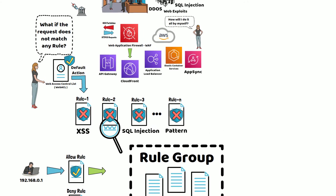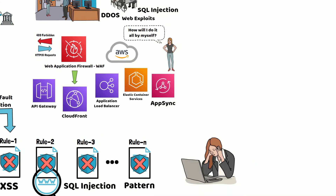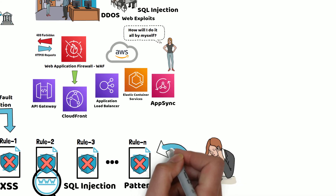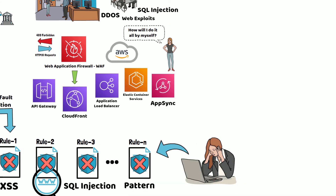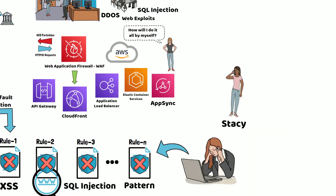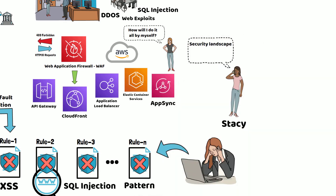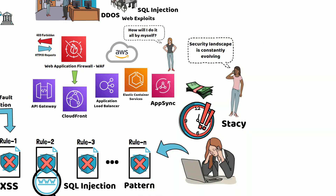One day, Jennifer was busy writing these rules to protect against various exploits. Her friend Stacy told her that keeping these custom rules up to date with constantly changing threats is both time-consuming and expensive.